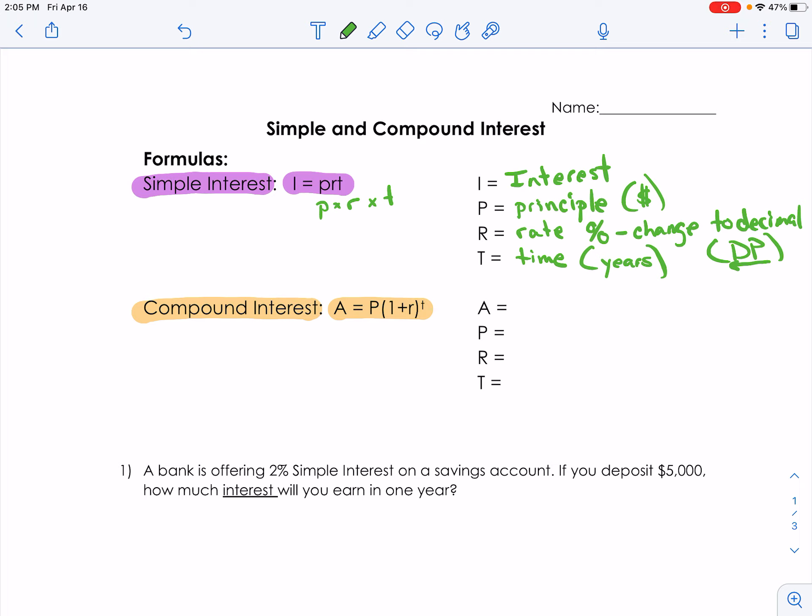So here A, this is the amount at the end. So it's getting us the total amount.